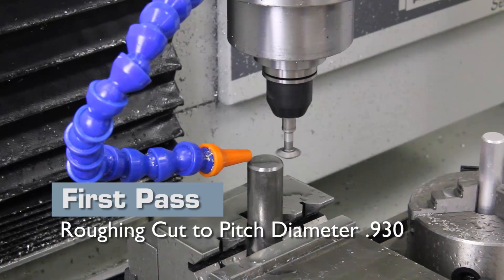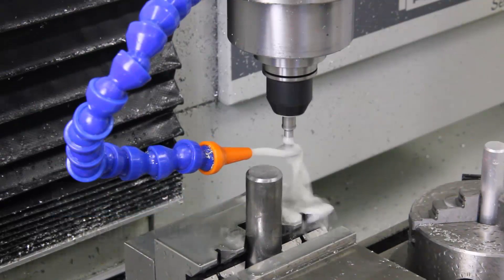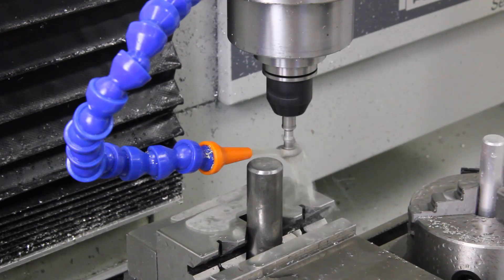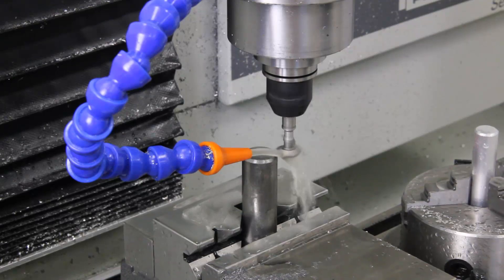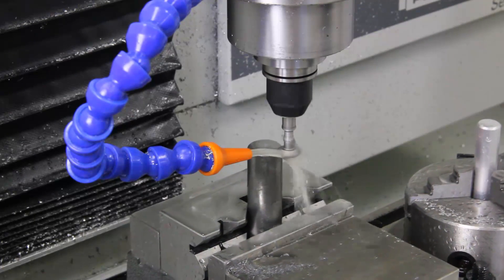We're going to do this in three passes. The first pass will take the threads to a 930 thou pitch diameter. The tool has been programmed to trace a helix around the outside diameter of the steel bar.